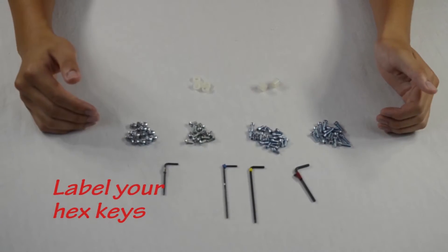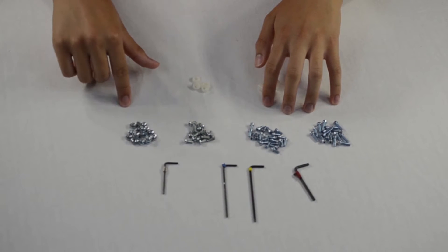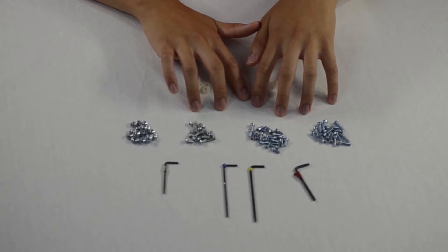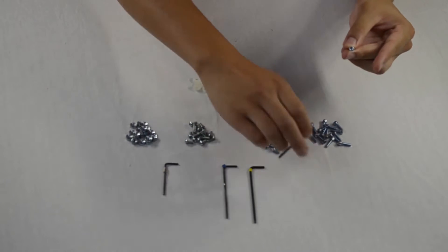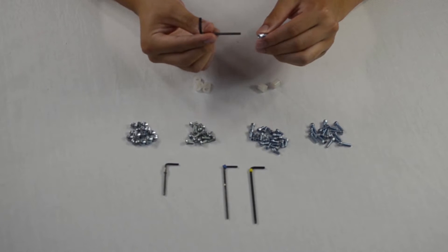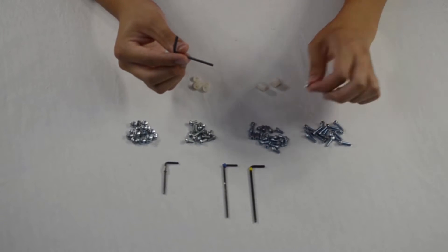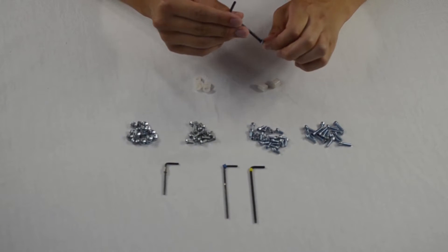Moving on to the bolts, there are three different types of bolts and one type of nut. The three different types of bolts: there is a longer one with a socket head that fits the red hex key, there is a shorter one with the same socket head, same red hex key fits in here.